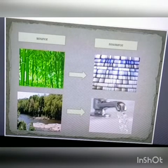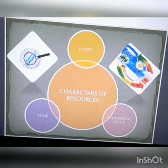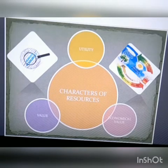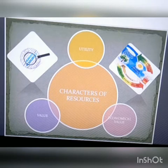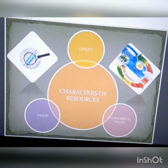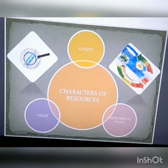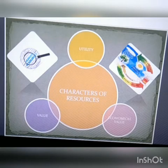Next, let us learn about the characteristics of resources: utility, value, and economical value. Let us know about utility. Examples: water, electricity, rickshaw, vegetable — these are all used by you, so they have utility. Utility or usability is what makes an object or substance a resource. Utility depends on usability according to the need — it makes us utilize either an object or a substance according to our need.